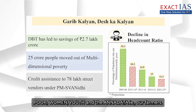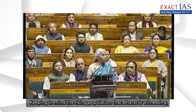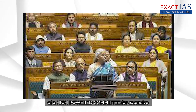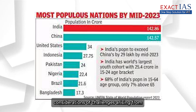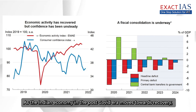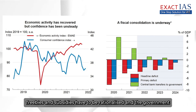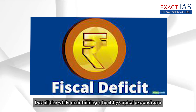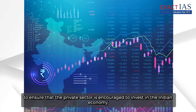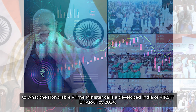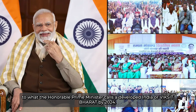The government wants to focus on four new groups: the Poor, Women, Youth, and the Annadatta — our Farmers. Keeping in mind the rising population that Bharat is witnessing, the government has called for establishment of a high-powered committee for extensive consideration of challenges arising from population growth and demographic challenges. All in all, this budget is a reflection of a non-populist, fiscally prudent Bharat. As the Indian economy in the post-COVID era moves towards recovery, freebies and subsidies have to be rationalised and the government must reduce its borrowing to bring down its fiscal deficit, while maintaining healthy capital expenditure to ensure the private sector is encouraged to invest. By identifying major stakeholders, this budget is a roadmap to what the Honourable Prime Minister calls a developed India or Viksit Bharat by 2047.